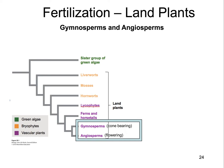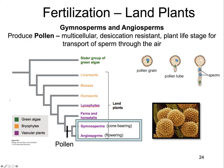Now let's switch gears and talk about how gymnosperms and angiosperms fertilize. We're talking about cone-bearing plants like pine trees and flower-bearing plants like rose bushes. Both gymnosperms and angiosperms produce pollen — mosses, ferns, and their allies do not produce pollen. Pollen is a unique trait that partially defines the gymnosperms and angiosperms.